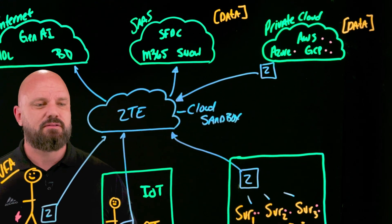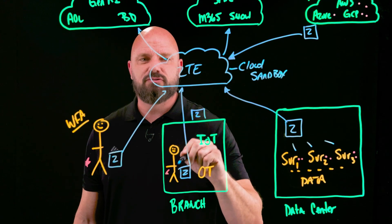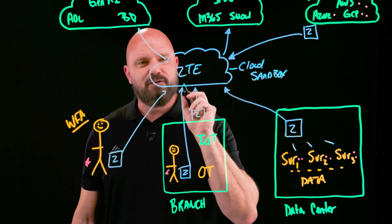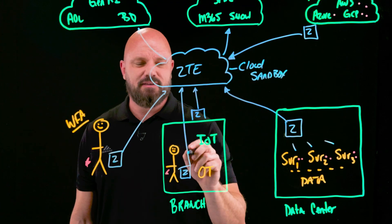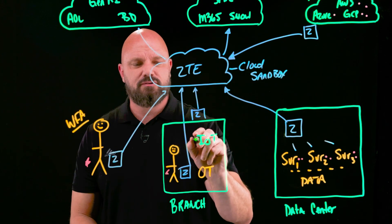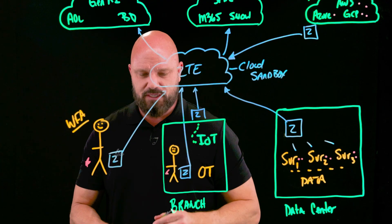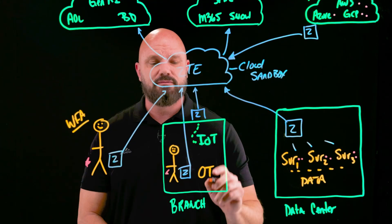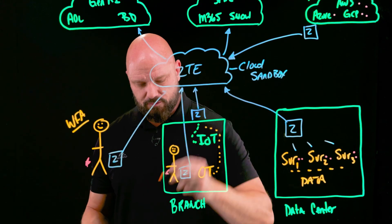Last but not least, we have the Zero Trust Branch — our entry level into Zero Trust SD-WAN — for any device in your environment that doesn't have our agent. It transparently intercepts that traffic, sends it to the Zero Trust Exchange, and that could cover your IoT or even your OT devices.